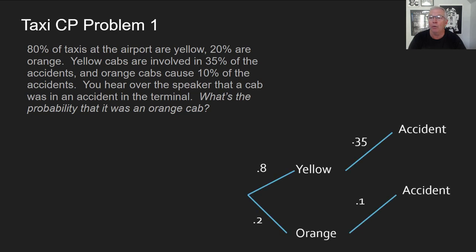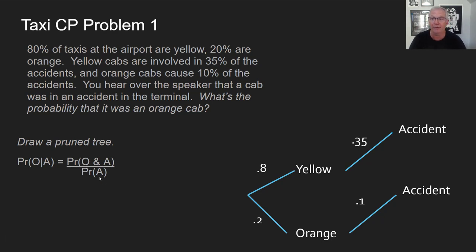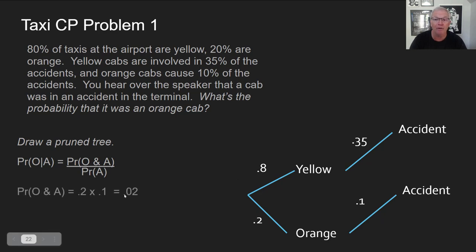We draw a tree and we're trying to solve: what's the probability it was orange given that it was in an accident? That's the probability that it's orange and it's in an accident over the total probability of accidents. The tree shows 80% of cabs are yellow, 20% are orange. Of the yellow ones, 35% are in accidents, and of the orange ones, 10% are causes of accidents. The probability it's orange and in an accident is 0.2 times 0.1, which equals 0.02.